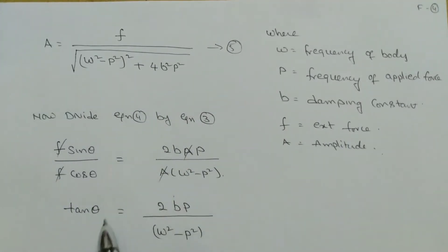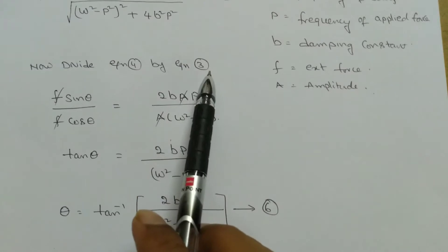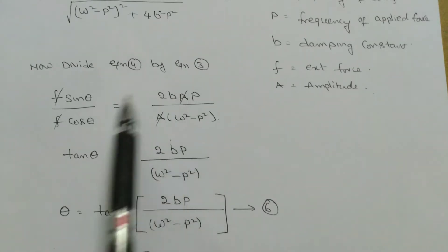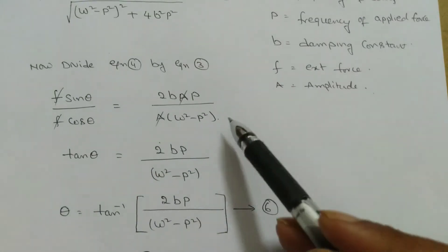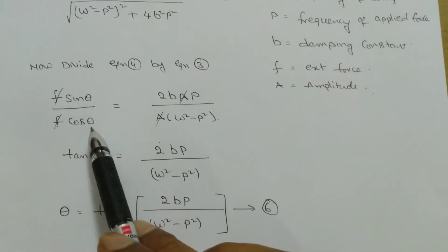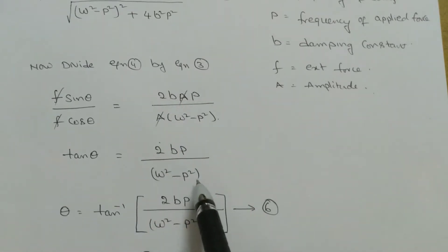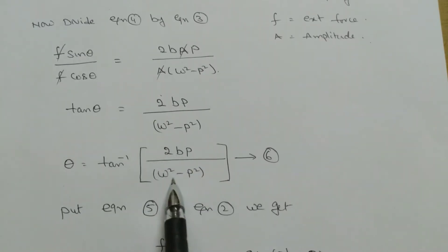Dividing equation 4 by equation 3 gives sin θ / cos θ = tan θ = 2bp / (ω²−p²). Therefore, the phase angle θ = tan⁻¹[2bp / (ω²−p²)] — equation 6.